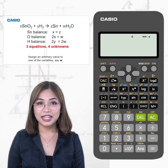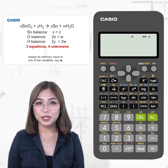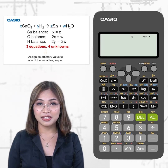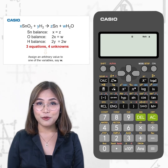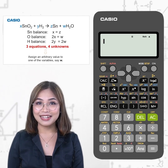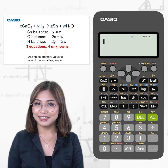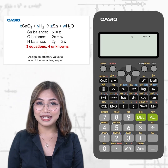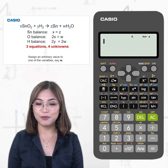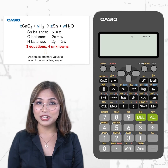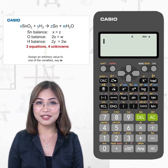For Sn balance, on the left side of the equation there is only one atom of tin, multiplied by x, so that's x. On the right side, we also have one atom of tin, so it becomes z. For O balance, we have two atoms of oxygen on the left side, so that would be 2x, and only one atom on the right side, so our second equation will be 2x equals w. The same can be done with H balance, yielding 2y equals 2w as our third equation.